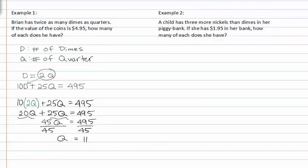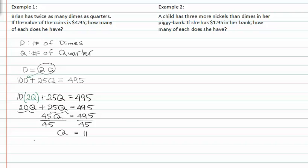If we know what q is equal to, we can most certainly find d. We know that d is equal to two times q, or two times eleven, so d is equal to twenty-two. We now found that there are eleven quarters and twenty-two dimes.